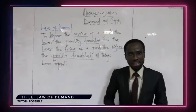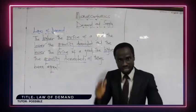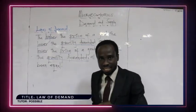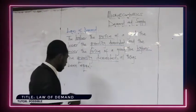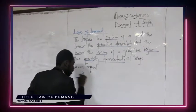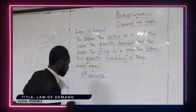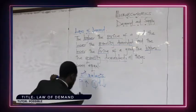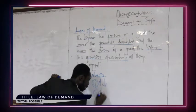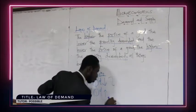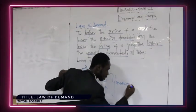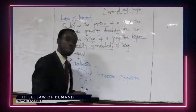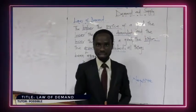From this definition we can see that when price is increasing, quantity demanded comes down, and when price is decreasing, quantity demanded goes up. From this we can see that there is a negative relationship between price of a commodity and quantity demanded. Under the analysis we can say that when price goes up quantity demanded comes down, and when price comes down quantity demanded goes up. There is an inverse or negative relationship between price and quantity demanded.